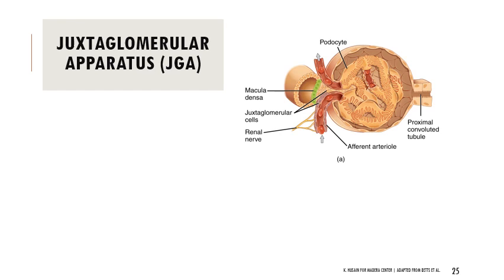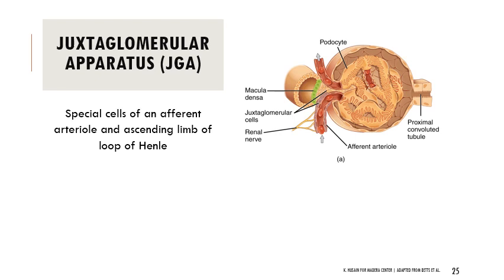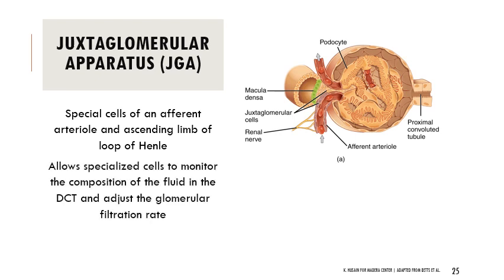We also have the juxtaglomerular apparatus — JGA for short — meaning something next to the glomerulus. These are special cells of an afferent arteriole and the ascending limb of the loop of Henle, more toward the distal convoluted tubule. The JGA allows specialized cells to monitor the composition of fluid in the distal convoluted tubule and adjust glomerular filtration rate accordingly — it's feedback information helping to regulate blood pressure and the rate of blood filtration.